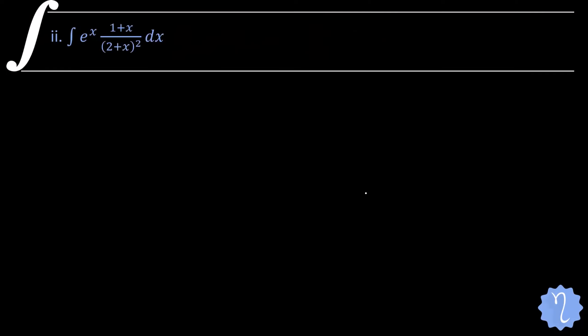Now in the next question we have eˣ into (1+x) divided by (2+x)². This is of the type ∫eˣ[f(x) + f′(x)] dx, and the answer for that type is eˣ·f(x) + c. We just need to bring it into that form.